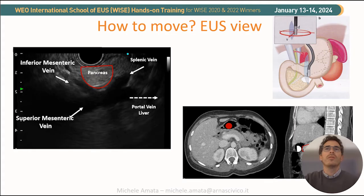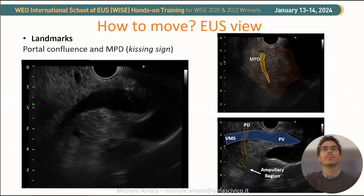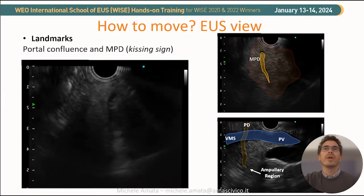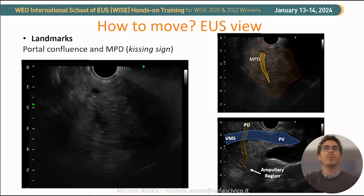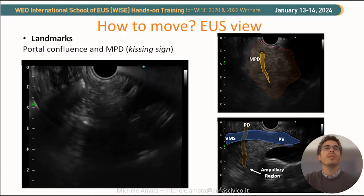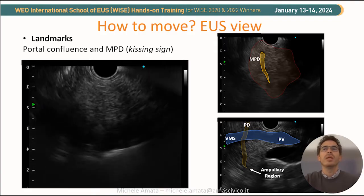Our position will be oriented to the right, looking posteriorly. We need to find the US view with contextual visualization of the splenic vein, superior mesenteric vein, and it is possible also to see the inferior mesenteric vein coming into the portal vein at the bottom right. From this position we will interrogate the head of the pancreas, the Wirsung duct going to the ampullary region, and we will see the kissing sign — a characteristic US image created by the contact between the Wirsung coming from the body and from the ampulla.